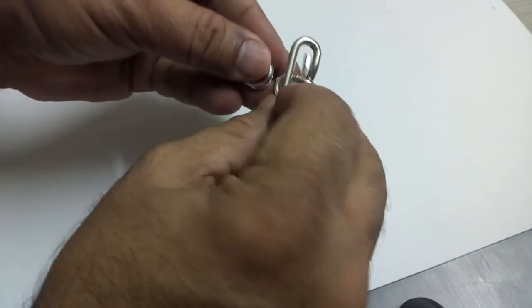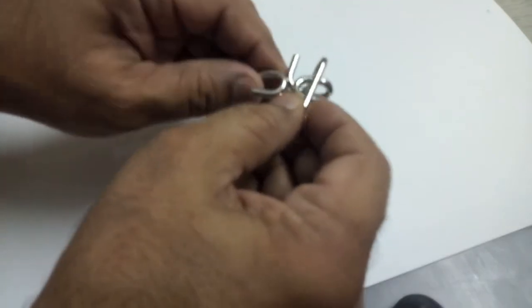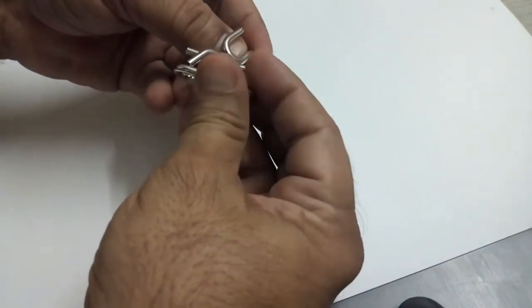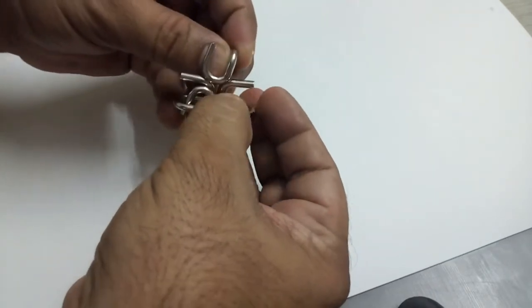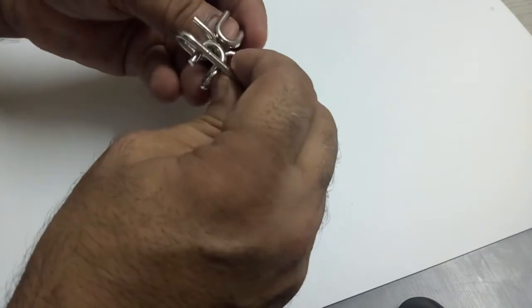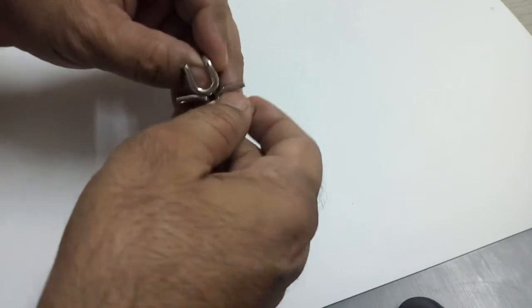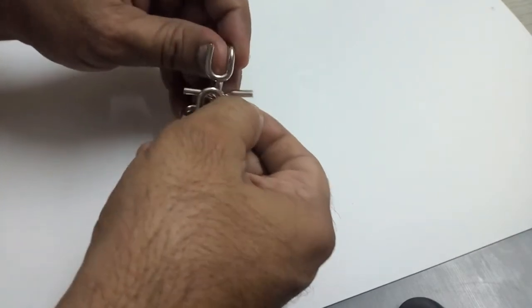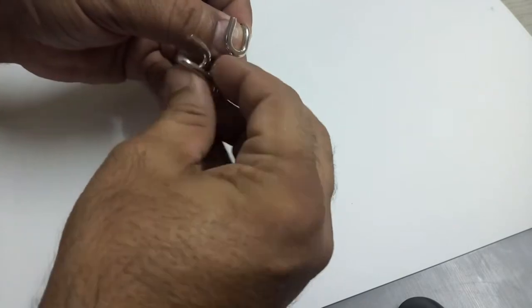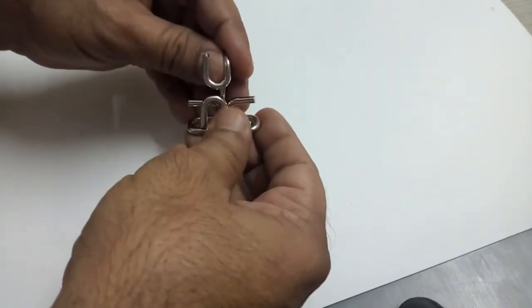Now after turning we have to see that these two are aligned to make them free. Now here is the trick that we have to twist two links simultaneously, otherwise it will not get free.